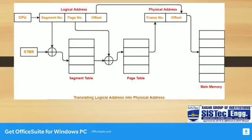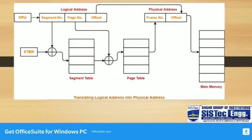The base address of the segment table is stored in the segment table base register. If you understand these points, you can easily understand how our physical address is obtained. The CPU always generates a logical address, and the physical address is needed to access main memory.